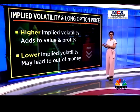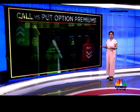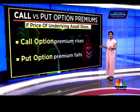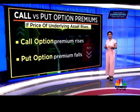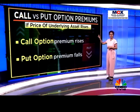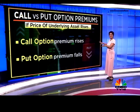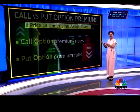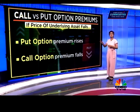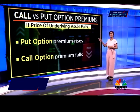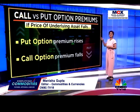The opposite is true if implied volatility decreases. As the price of the underlying security changes, the option premium changes. As the underlying security price increases, the premium of a call option increases, but the premium of a put option decreases. As the underlying security price decreases, the premium of a put option increases, and the opposite is true for the call option.